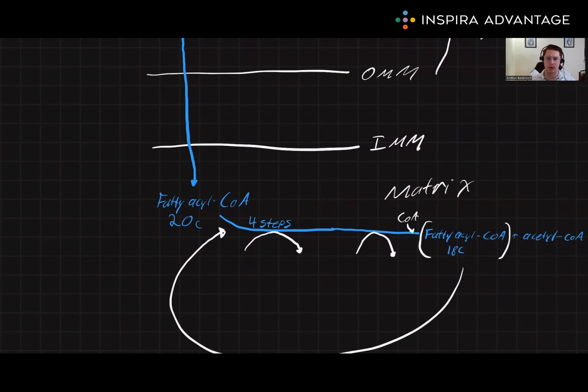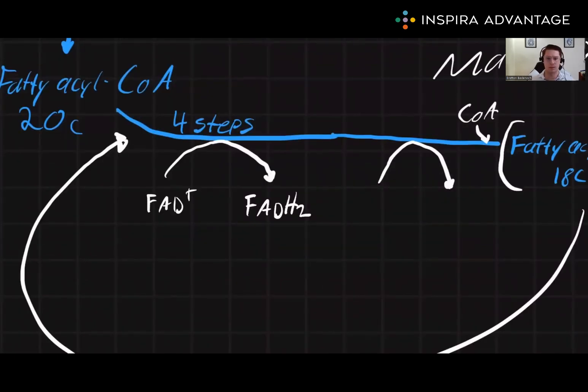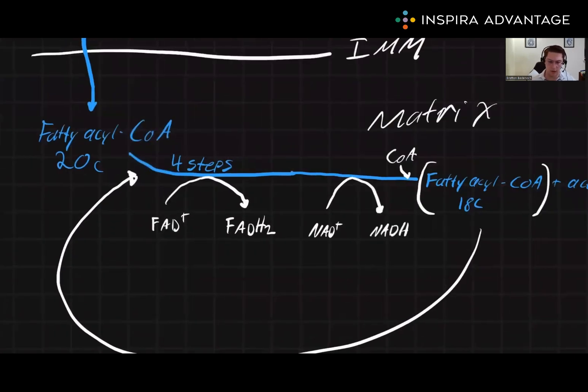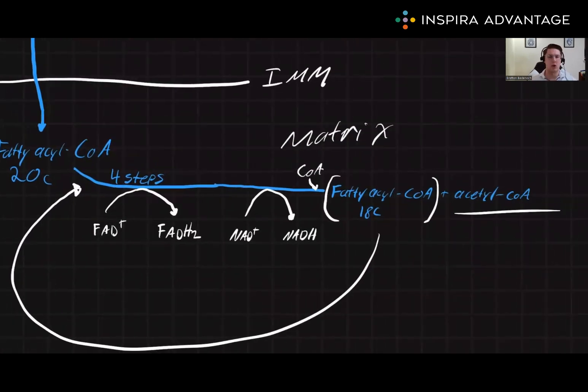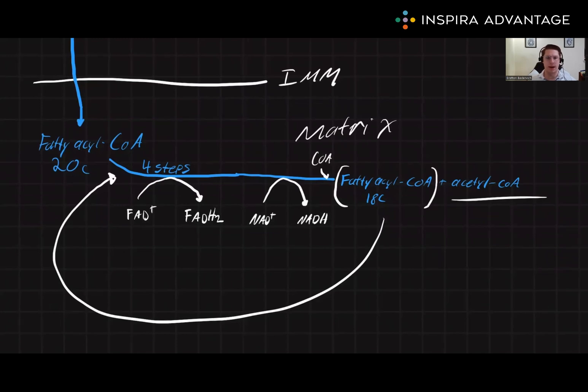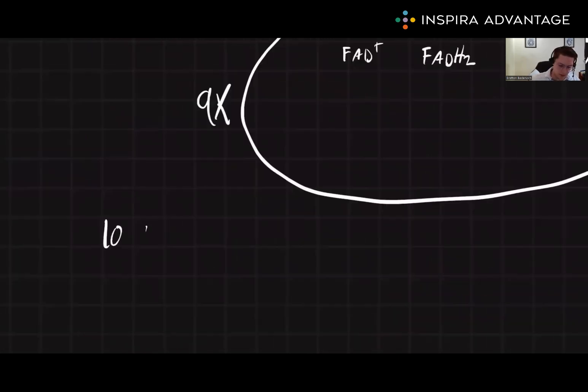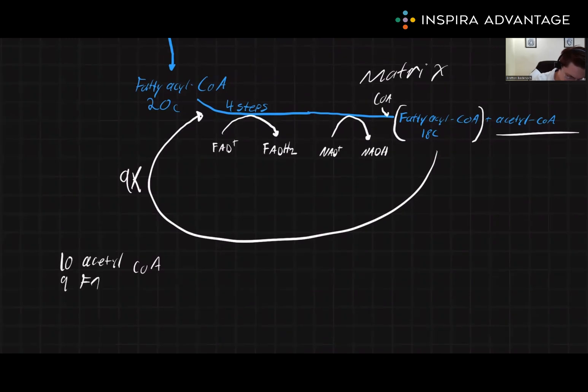you do need to know that they're going to produce one FADH2 and one NADH. We also are going to lose one acetyl CoA during every single cycle, which we see is replaced by adding a CoA in during that last step. So we lose a CoA and bring a CoA back in. Now for a 20-carbon fatty acid, this cycle is going to repeat a total of nine times. This means that we're going to produce 10 acetyl CoA, we're going to make 9 FADH2, and we're going to make 9 NADH.